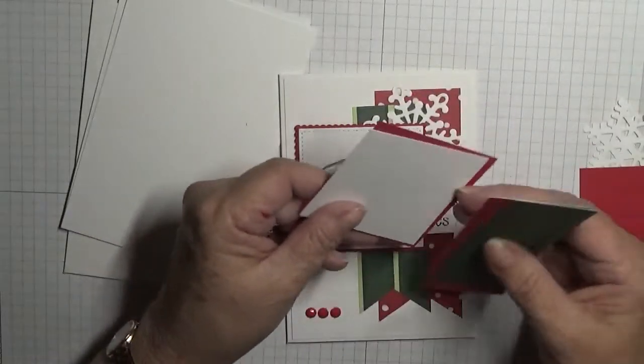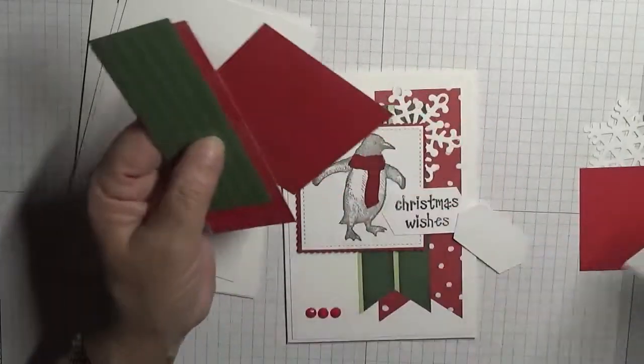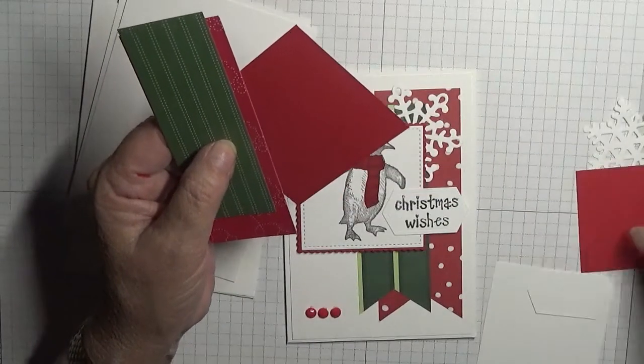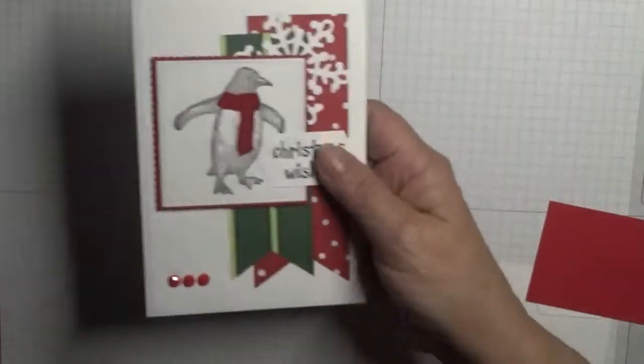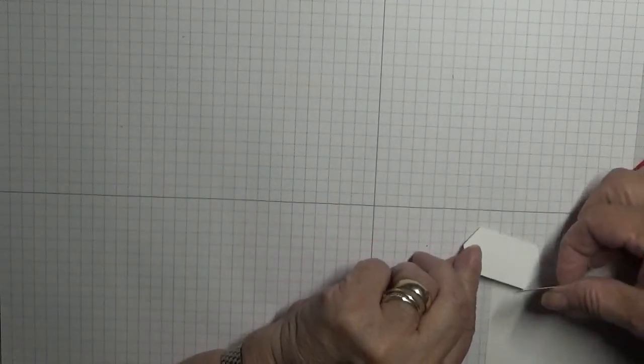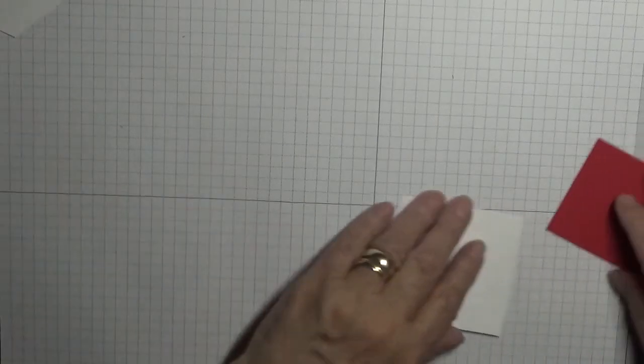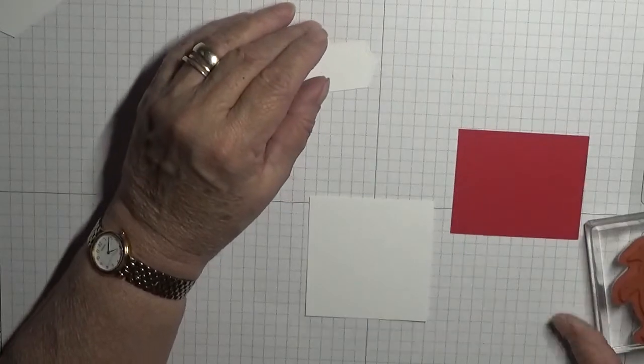And I've got a scrap of red for the penguin scarf. So I need that to stamp on a little bit. That stamp on the scarf. These can all go to one side for now. Right, I have got two of these, in case I make a mistake.